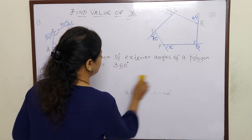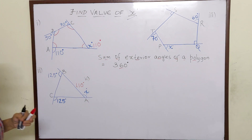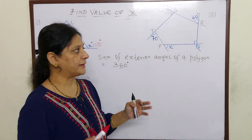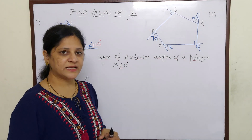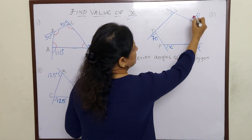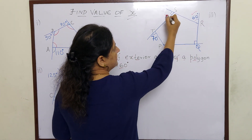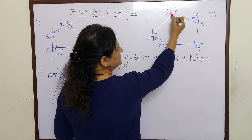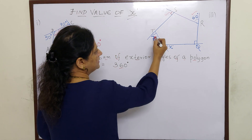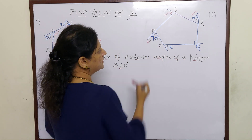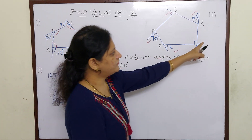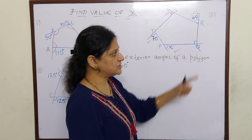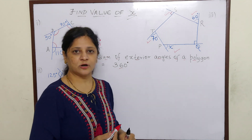Now let us go to the third figure. This is in the shape of a pentagon — an irregular pentagon — and 5 lines means there will be 5 exterior angles. The 1st is 60, the 2nd is 90 (because the square symbol tells us it is a right angle), the 3rd is 70, and the 4th is x. But the 5th exterior angle information is not given.